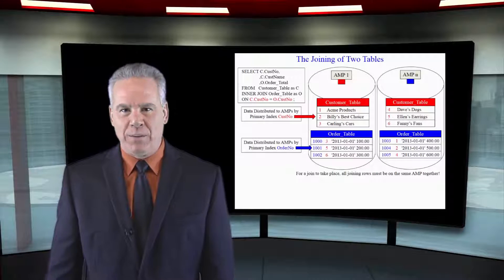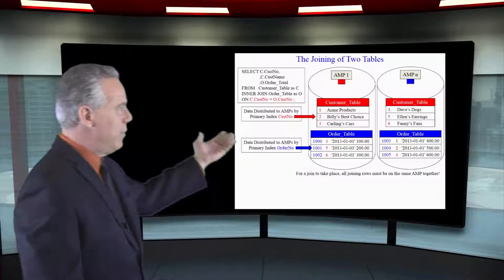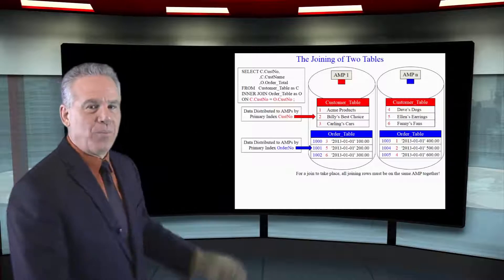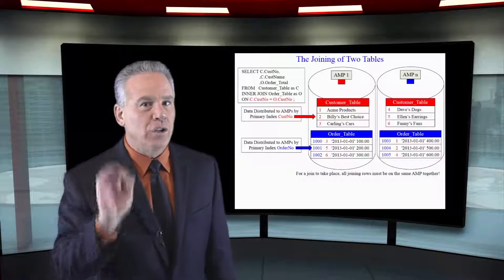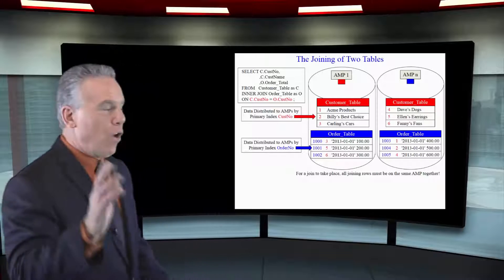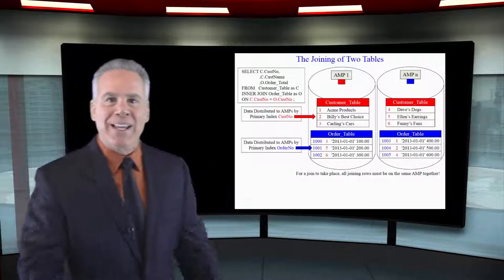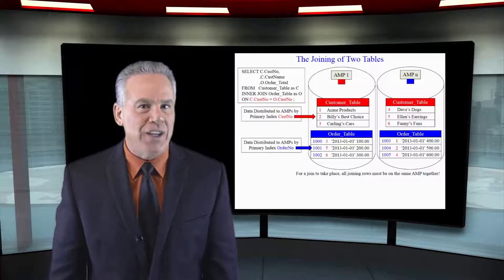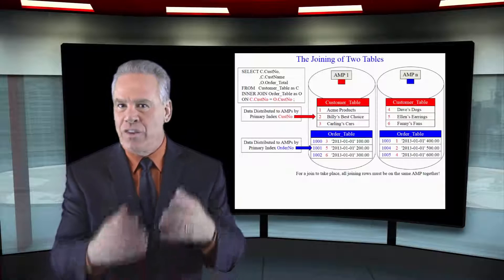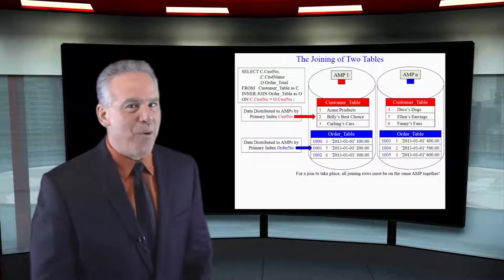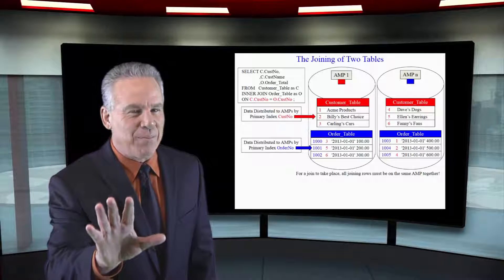Let's see that from a theory standpoint. Look at our customer table. In red, I have placed the customer number for you. Now, I want you to look at the order table. I've also placed in red the customer number there, but they are not on the same exact amps with their matching counterpart because this order table had a primary index of order number. I've got that in blue for you.